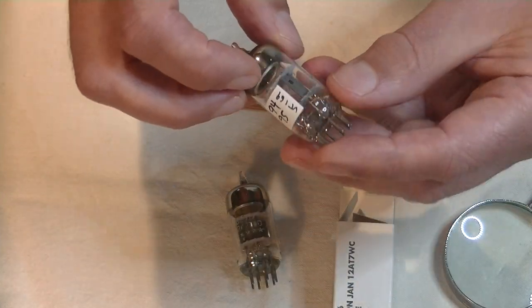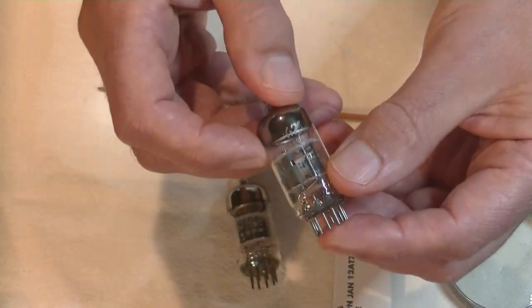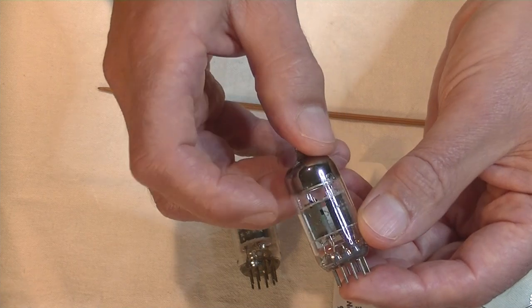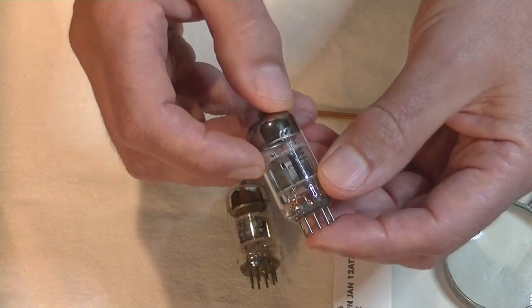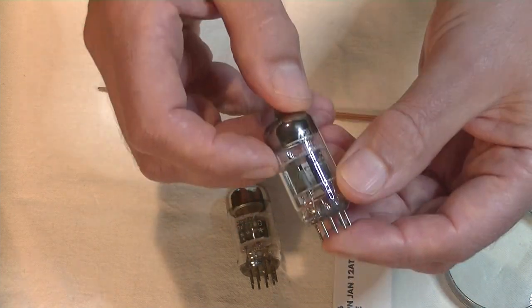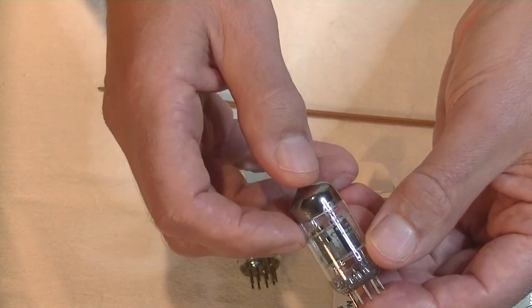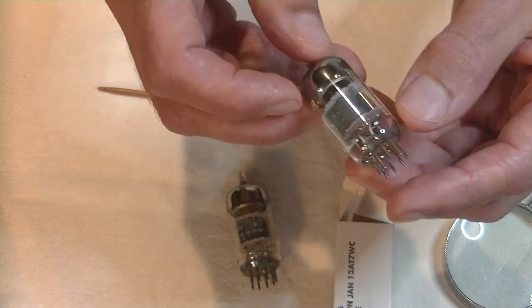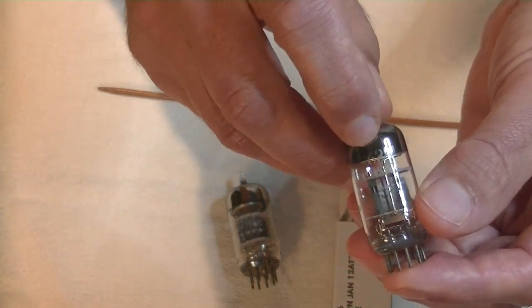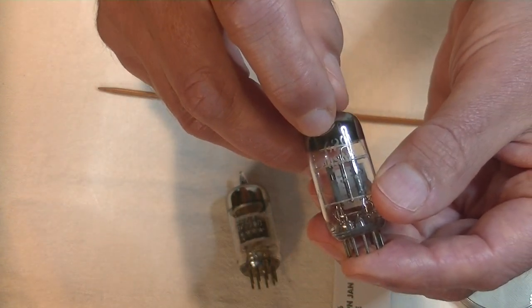Last up today is another GE tube. GE stands for General Electric, by the way. This is a GE JAN-12AT7WC. The previous one was the WB. Or, up here, you can see it's etched right into the tube, 6201.